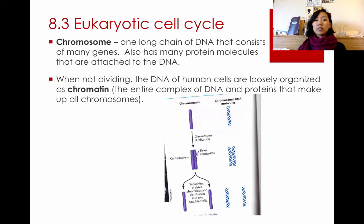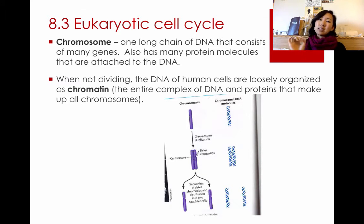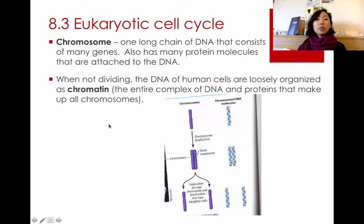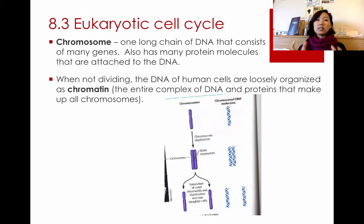The eukaryotic cell cycle is a little bit more complicated. To review some terms: chromosomes are the DNA chain — a long chain of DNA that consists of many genes. There are also proteins inside that DNA that help it coil up and unravel. Normally when the DNA is not dividing, it's called chromatin, which describes all of the DNA inside your nucleus, including all the chromosomes.